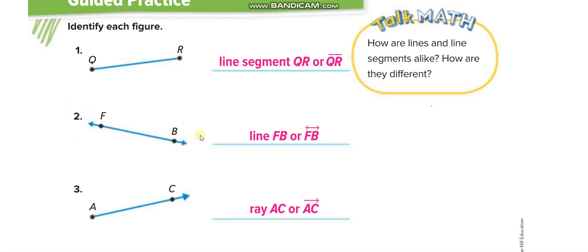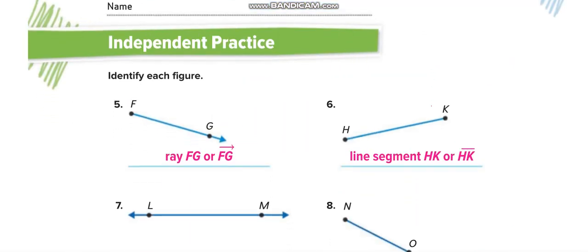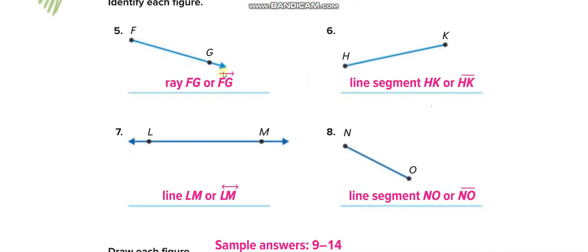Two arrows extending on both sides — it is a line: Line FB, or written this way. Just a single arrow extending on one side — it is a ray: Ray AC. Next, a single arrow and an endpoint on the other side — Ray FG. No arrows — it is a line segment: Line Segment HK, or written this way.